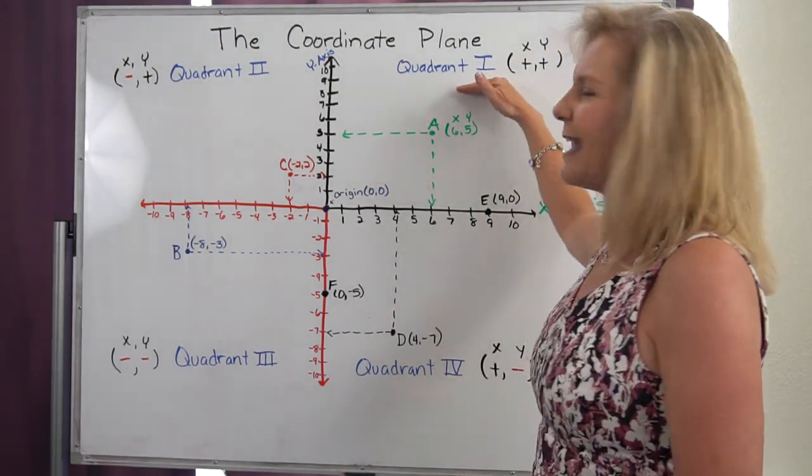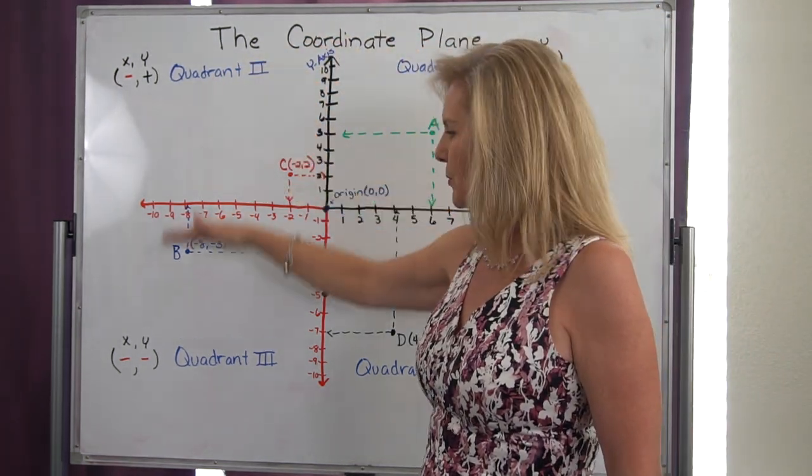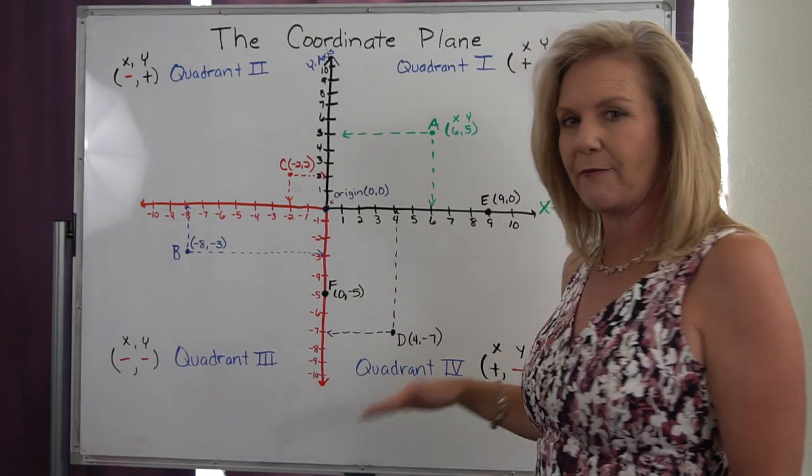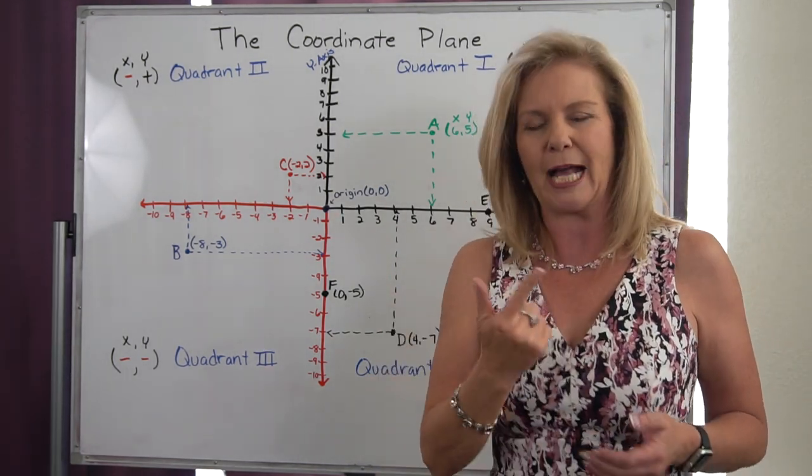But then they went counterclockwise. So it goes quadrant one, quadrant two, quadrant three, quadrant four. It's not usually the way you think of it. Think of it going backwards.